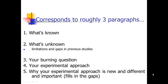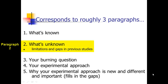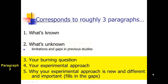You can think of this as roughly three paragraphs. Paragraph one could be the what's known. Paragraph two could be the what's unknown — the limitations and gaps in previous studies. Sometimes authors will switch between what's known and what's unknown across multiple paragraphs. Then the last paragraph covers the question statement, your quick overview of your experimental approach, and how your study fills in those gaps. That's often how it falls out, though you don't always have to have exactly three paragraphs.